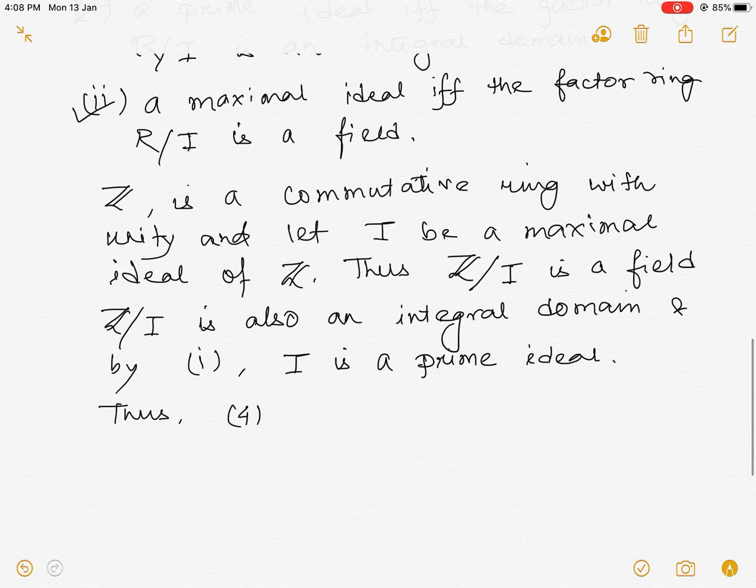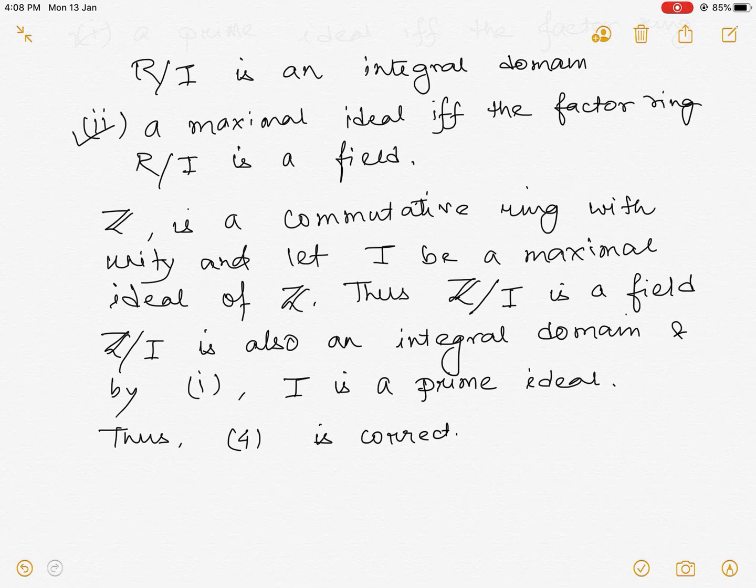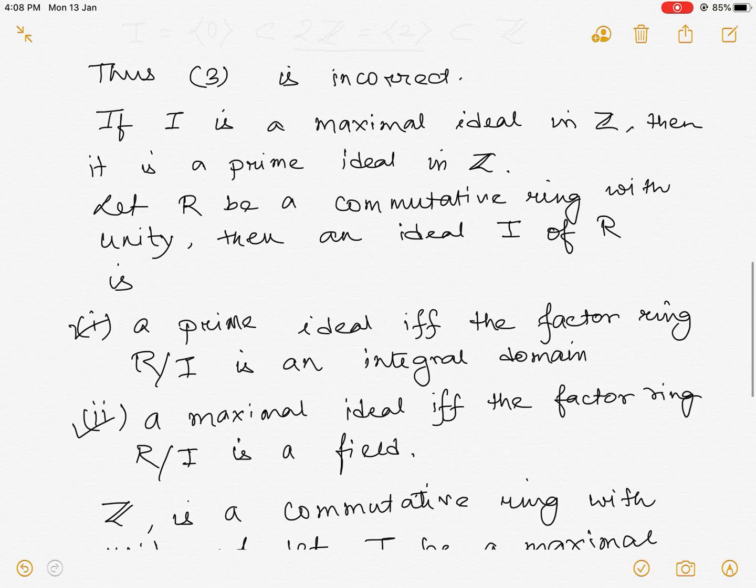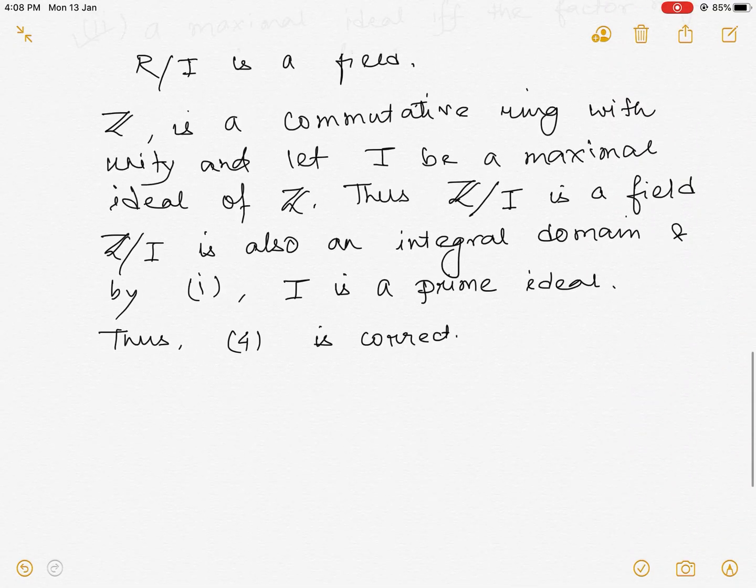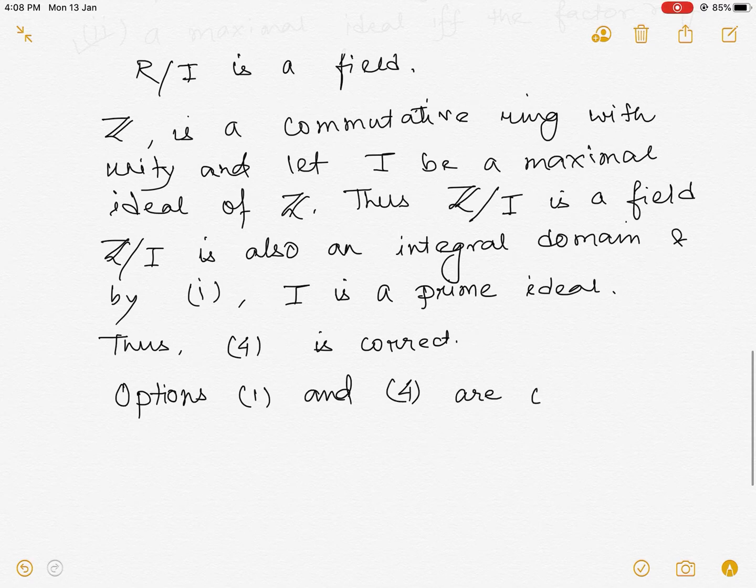Thus our option 4 is correct. In fact, option 4 is correct for every commutative ring with unity: if I is a maximal ideal of a commutative ring with unity, then I is also a prime ideal. So our correct options are options 1 and 4. Thanks for watching.